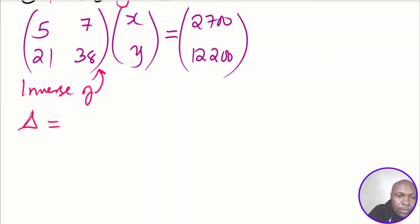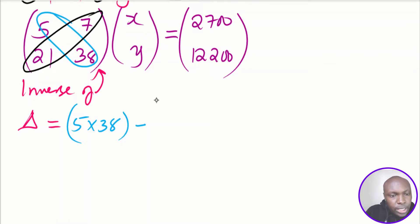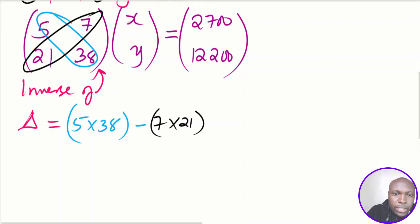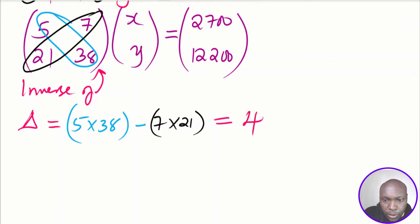The determinant is found by taking the main diagonal product, 5 multiplied by 38, and subtracting the other diagonal product, 7 times 21. Using a calculator, this gives a determinant of 43.